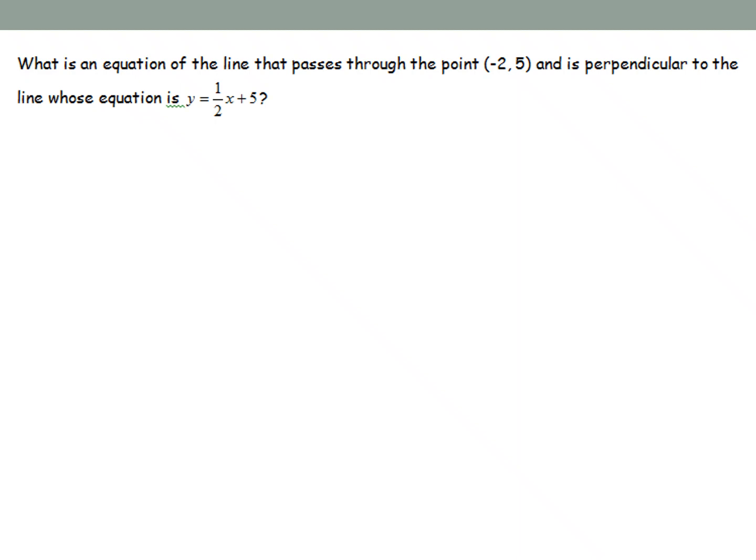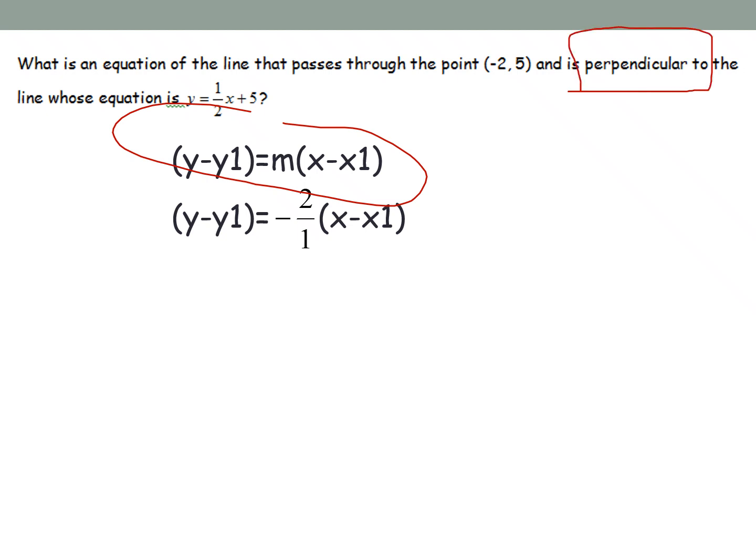So the next one, we are using our point negative 2, 5. And we want to write the equation that is perpendicular to the equation that has y equals negative 1 half plus 5 and also goes through that point. So when you see that it needs to pass through a point, you should automatically know that we're using point slope form.